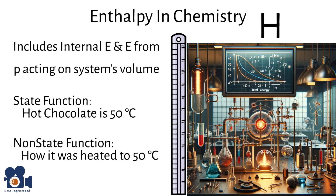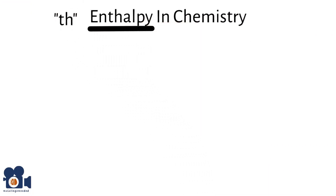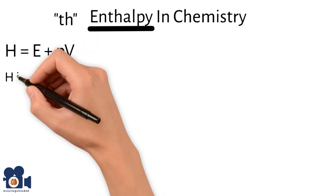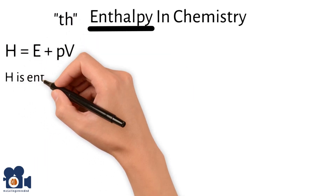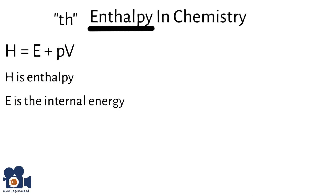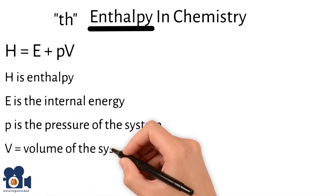It's easiest to remember it being H by emphasizing the TH in enthalpy. It's defined as H equals E plus PV, where H is enthalpy, E is the internal energy of the system, P is the pressure of the system, and V is the volume of the system.